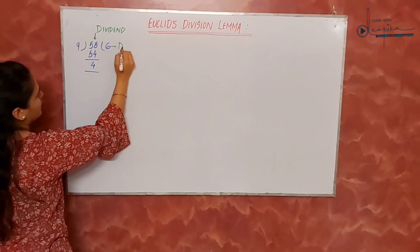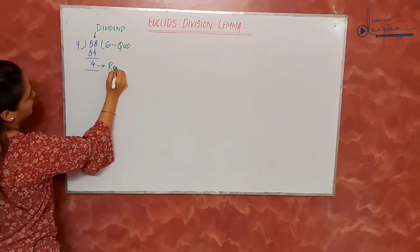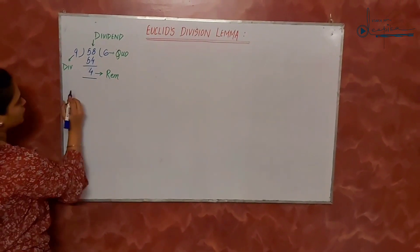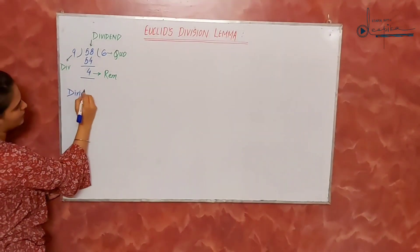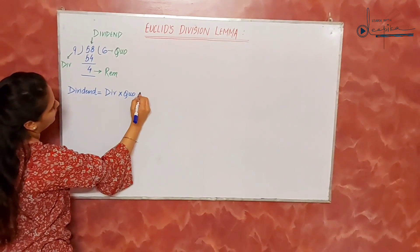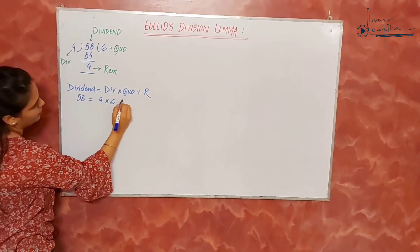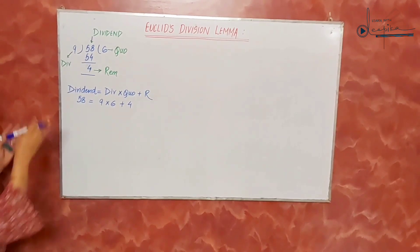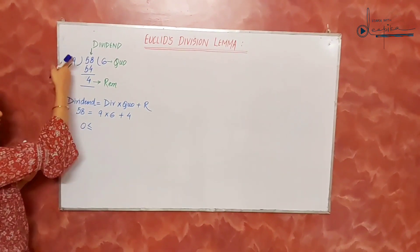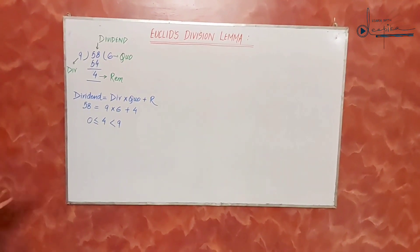We know that 58 is our dividend, 6 is the quotient, 4 is the remainder, and 9 is our divisor. We can also write it as: dividend equals divisor multiplied by quotient plus remainder. Hence, 58 equals 9 into 6 plus 4. Here the remainder can be 0 or greater than 0, but it should be less than the divisor, which is 9.